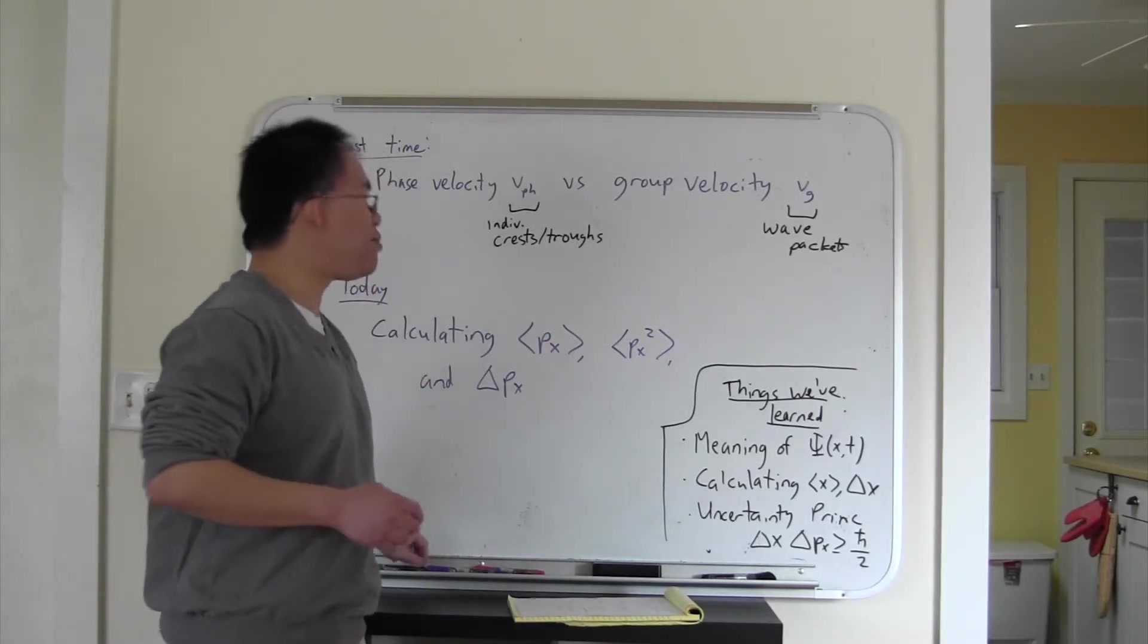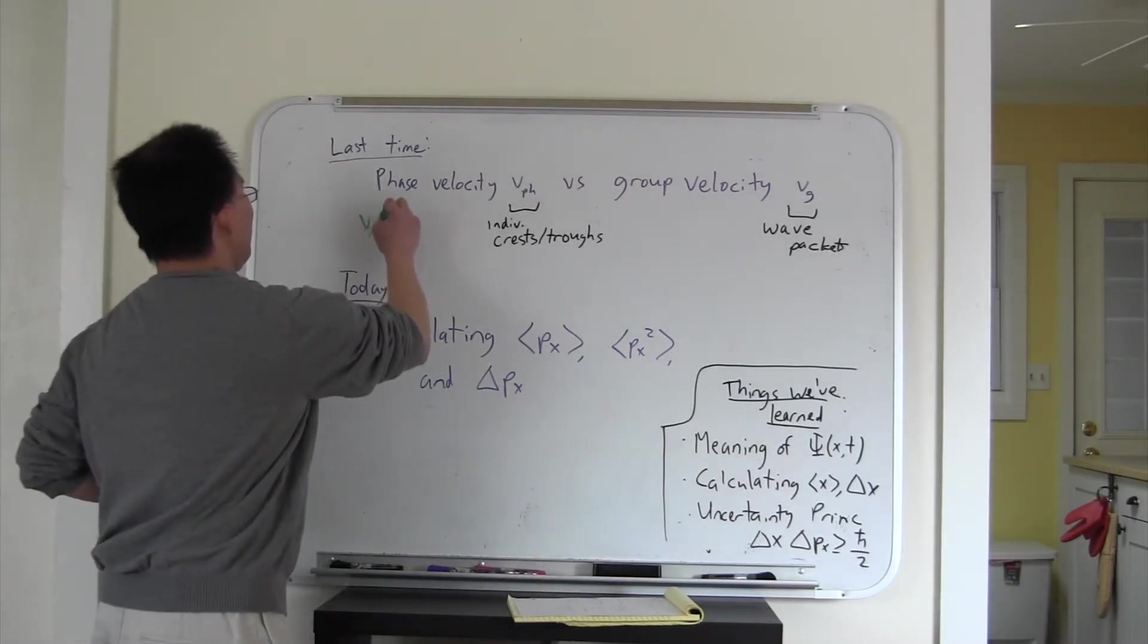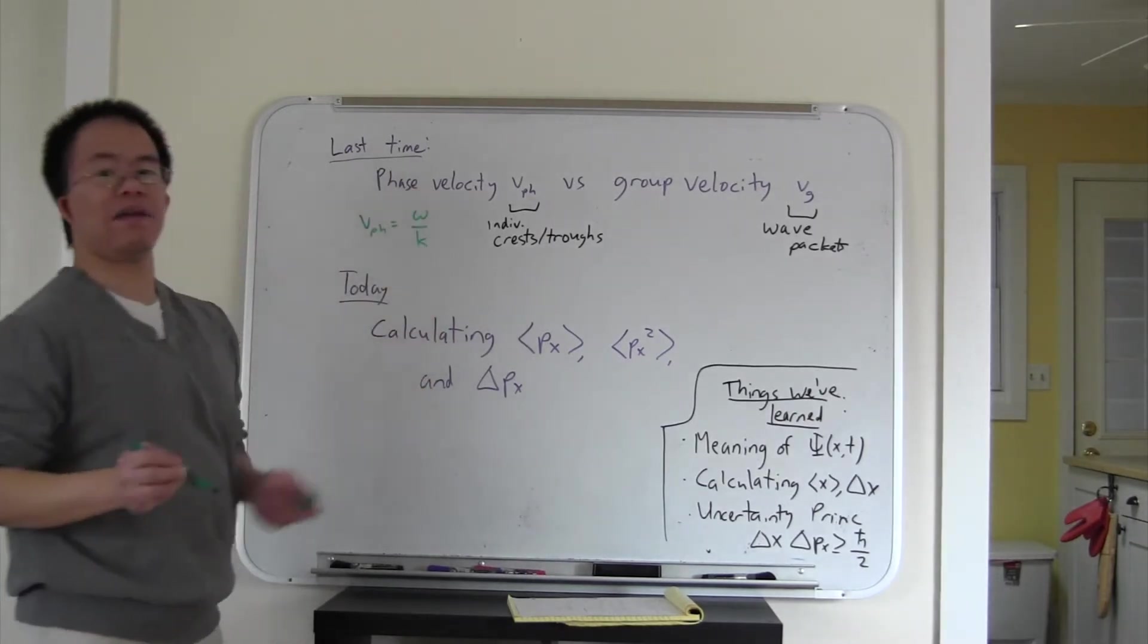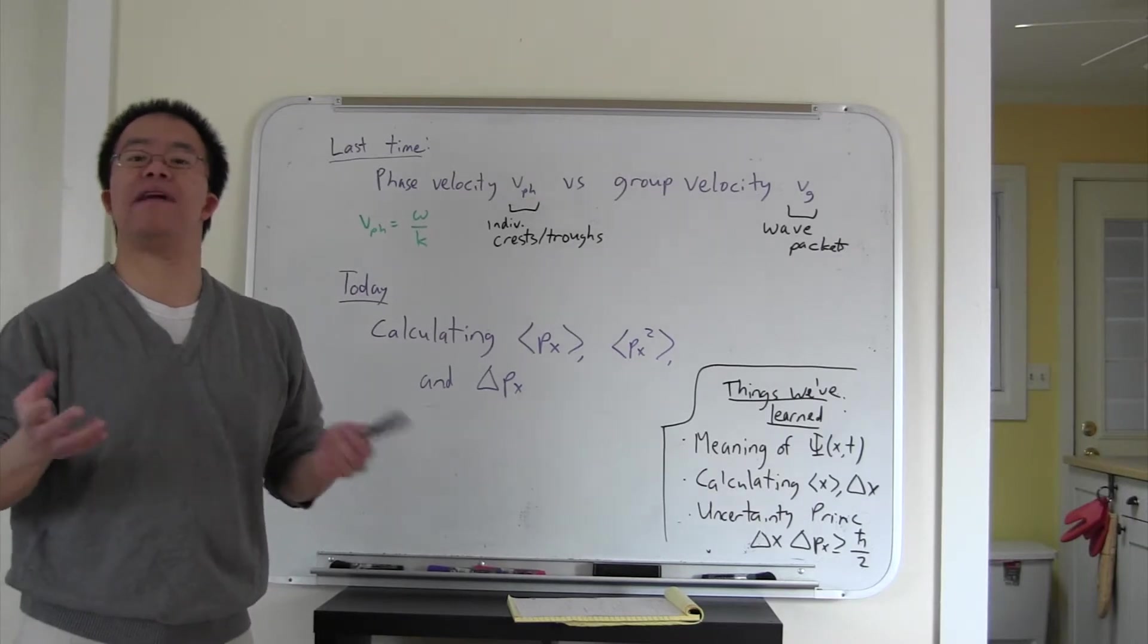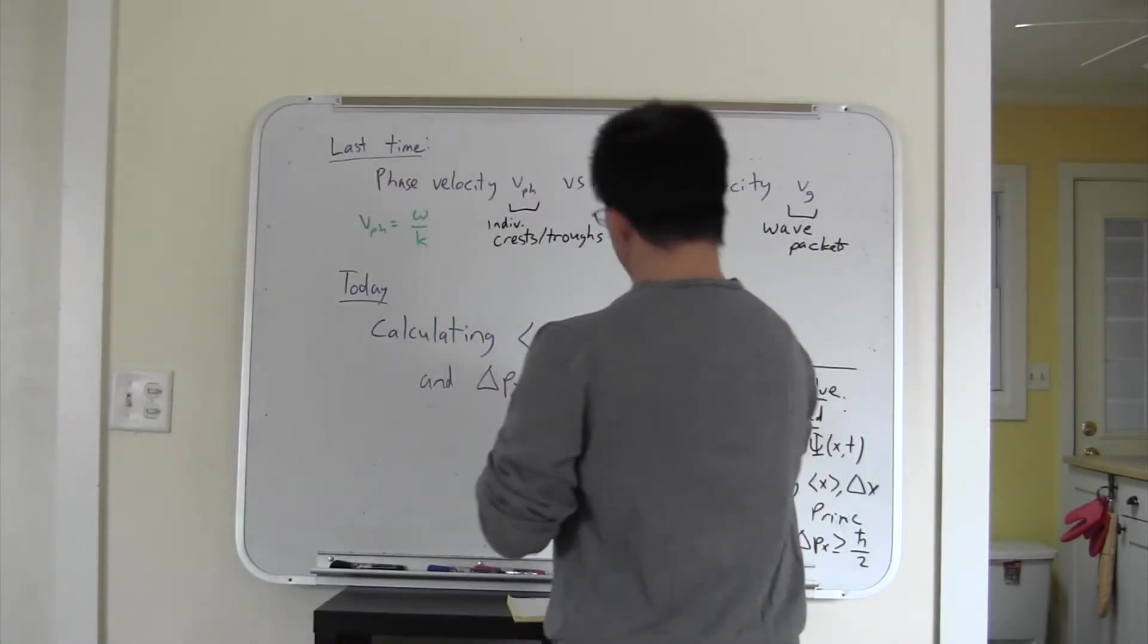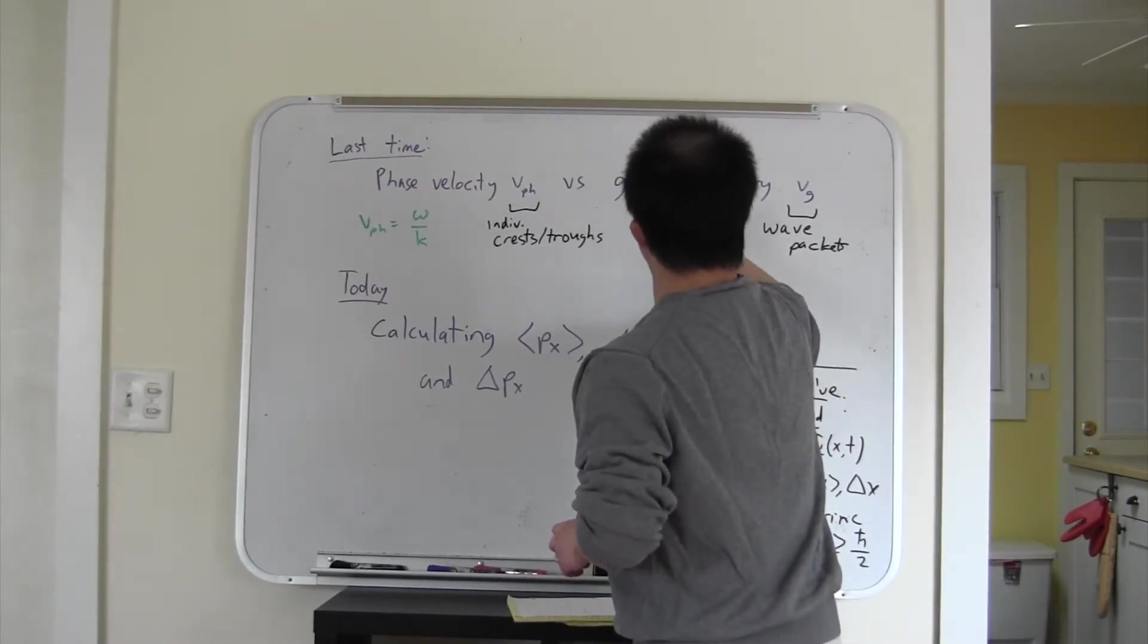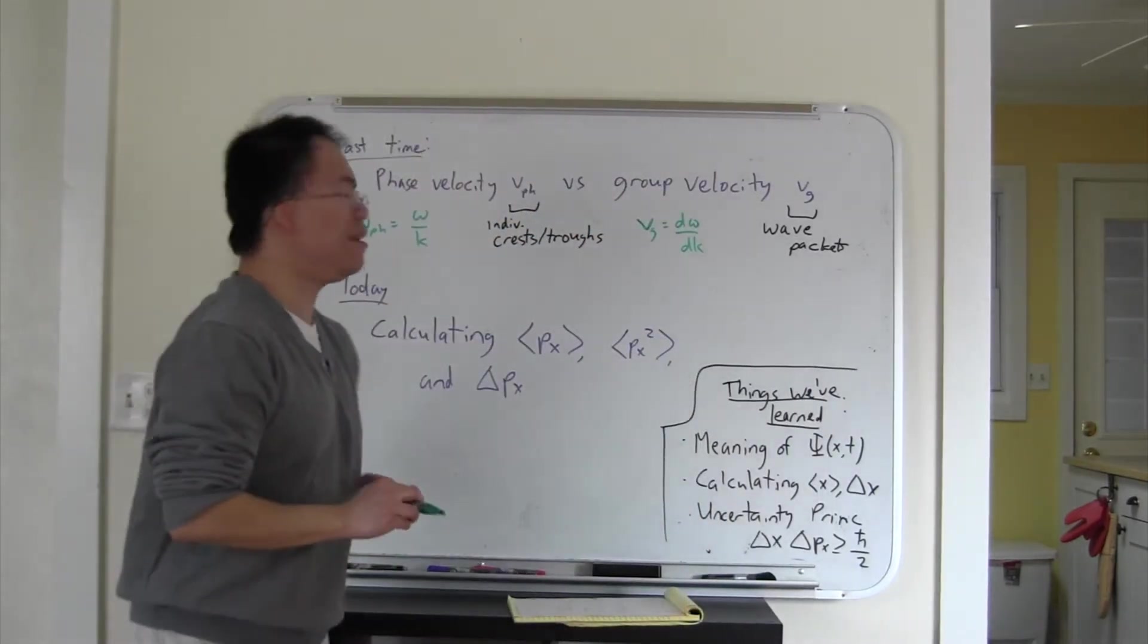Let me just remind you of the definitions. v phase is given by omega divided by k, where we assume that the angular frequency omega depends on the wave number k. And v group is given by d omega dk.